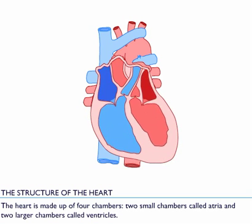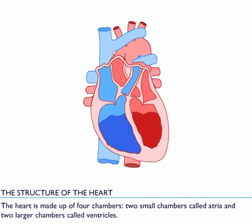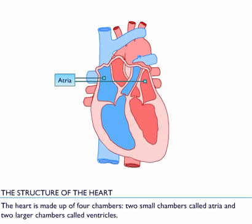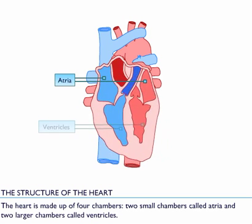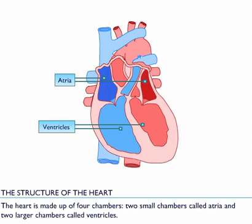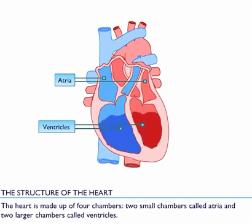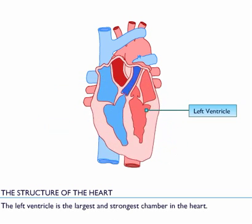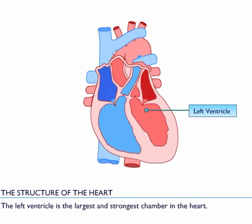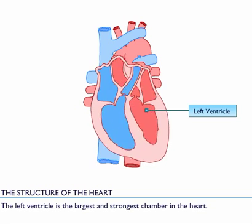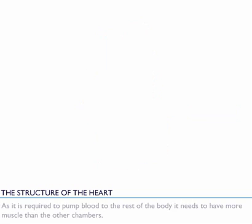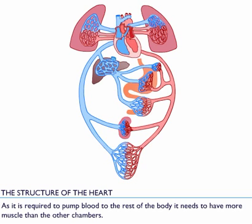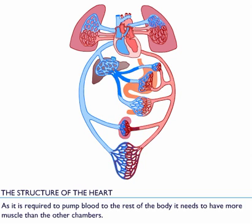The heart is made up of four chambers: two small chambers called atria and two larger chambers called ventricles. The left ventricle is the largest and strongest chamber in the heart. As it is required to pump blood to the rest of the body, it needs to have more muscle than the other chambers.